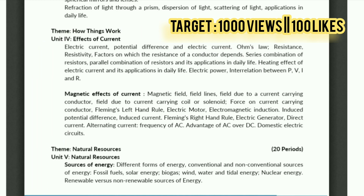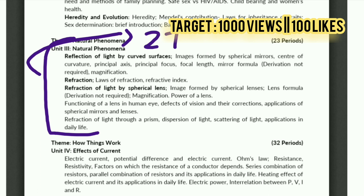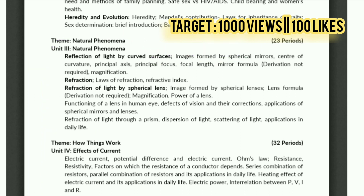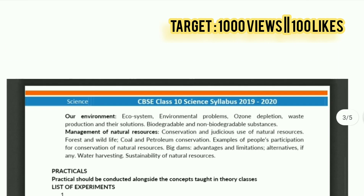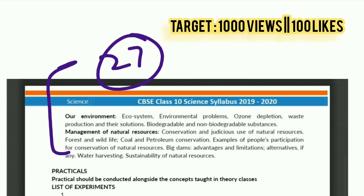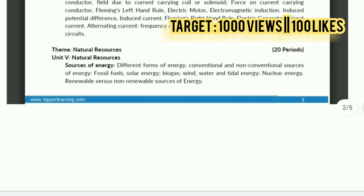Now comes the 27th. You need to complete the Natural Phenomena unit: Reflection of Light by Curved Surfaces, Refraction, and Refraction of Light by Spherical Lenses. These three topics are in the Natural Phenomena unit and you have to finish all three on the 27th. Besides that, you also have to do Sources of Energy, Our Environment, and Management of Natural Resources — follow NCERT questions for those chapters.